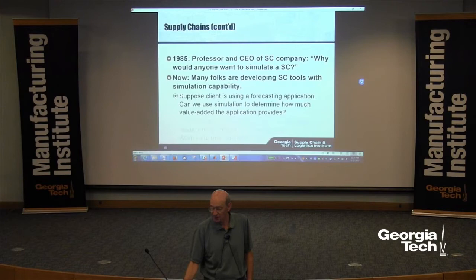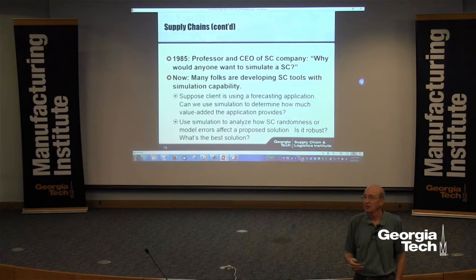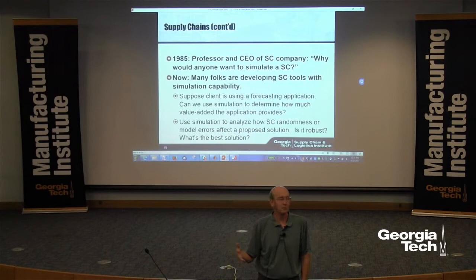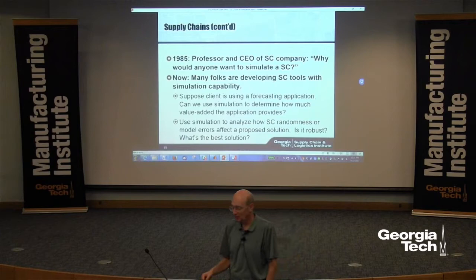Simulation can be used to assess the effects of randomness: is a particular solution strategy robust against violations in your assumptions? JetBlue had a meltdown during a minor blizzard in Denver and it took them two weeks to recover, whereas other airlines were back on board quickly — because JetBlue had over-optimized its system and didn't have a robust optimization.